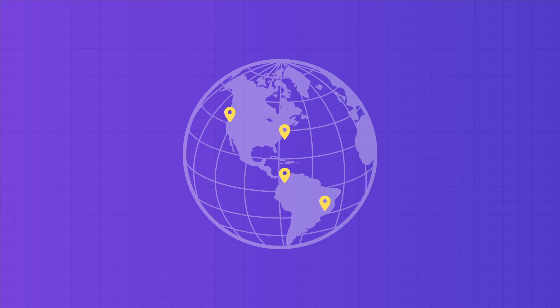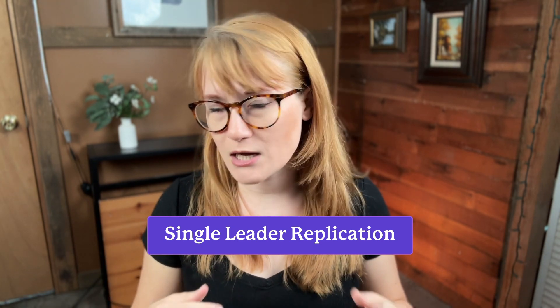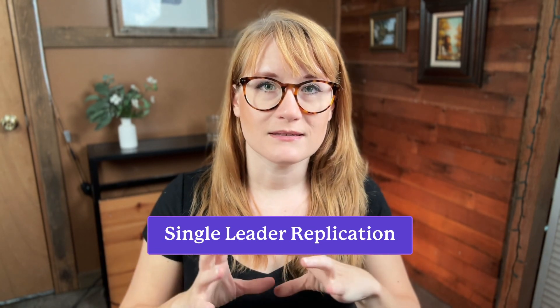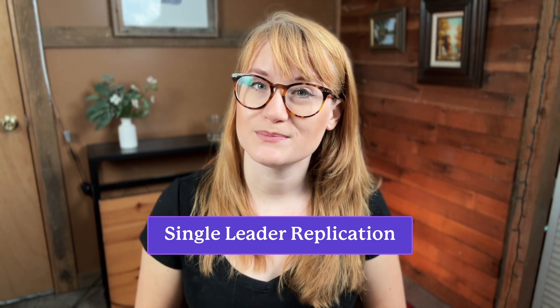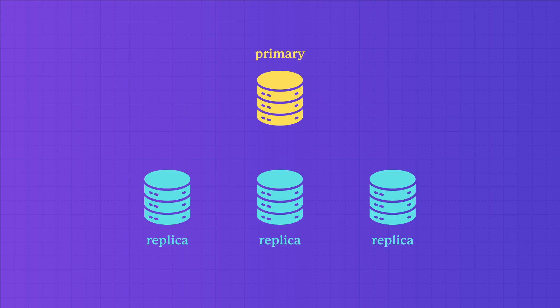You've got instances of your app all over the world, and you'd like to keep your data as close to those servers as possible. You can't just copy your database to every region — how would they all stay in sync? They wouldn't. The most common solution is called single leader replication, also known as primary replica or leader follower, and this is something you get out of the box with Postgres.